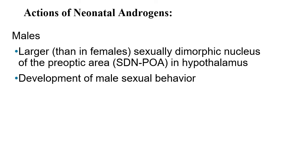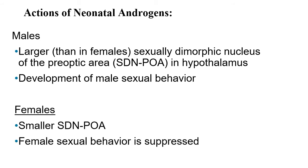Looking at the androgen system — mainly testosterone — in males there is a larger sexually dimorphic nucleus of the preoptic area (SDN-POA) in the hypothalamus. This results in a greater release of androgens and develops into later male sexual behavior. In females, they have a smaller dimorphic nucleus of the preoptic area of the hypothalamus, which ends up making female sexual behavior slightly suppressed compared to males.